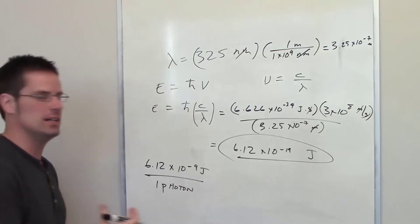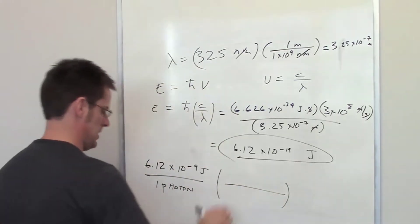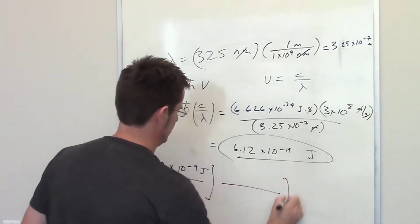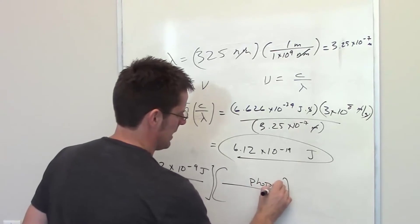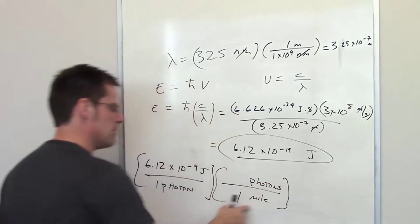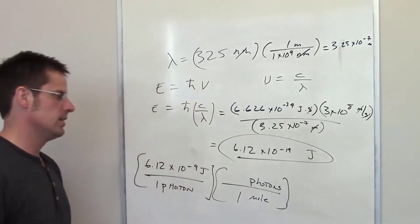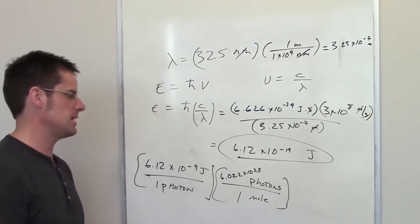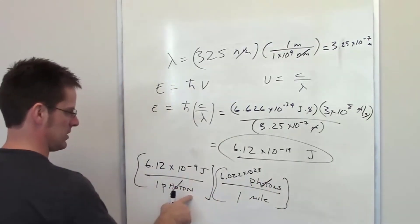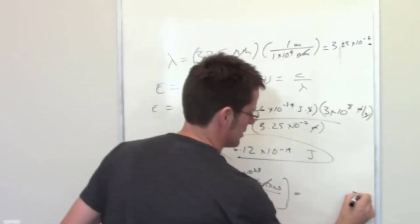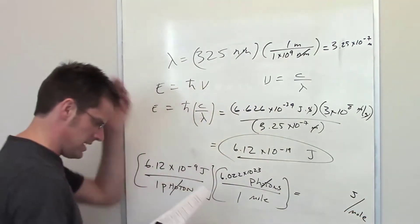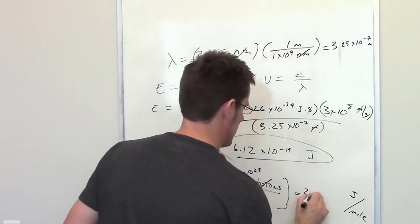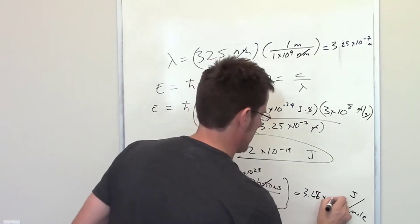It's asking how many joules you'll find in an entire mole of photons. So I'll figure out how many individual photons are in a mole. In one mole of photons, that's Avogadro's number: 6.022 times 10 to the 23rd photons per mole. The photons unit-wise cancel each other out and I'm left with joules per mole. I throw that in my calculator and end up getting 3.68 times 10 to the 5th joules per mole.